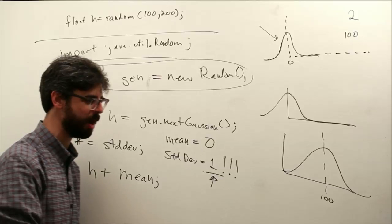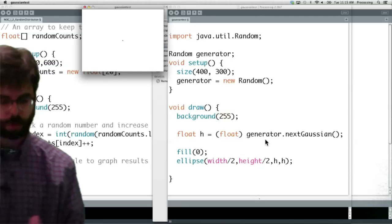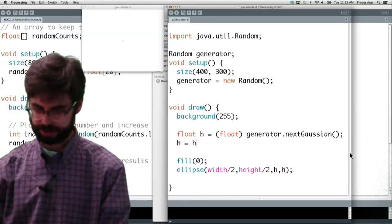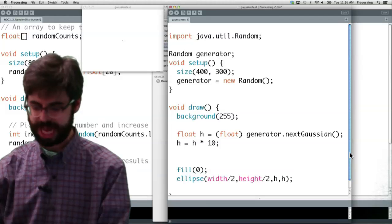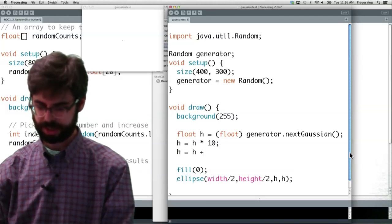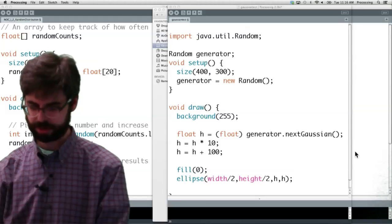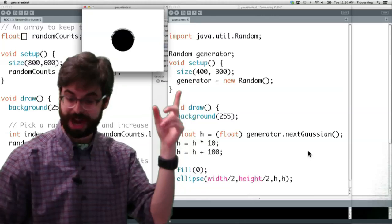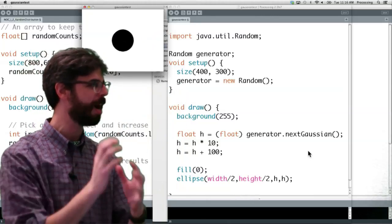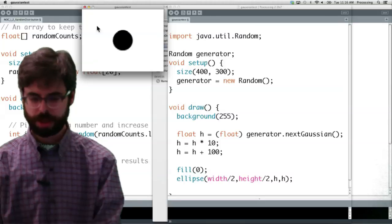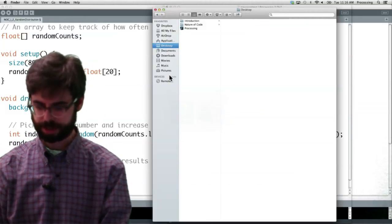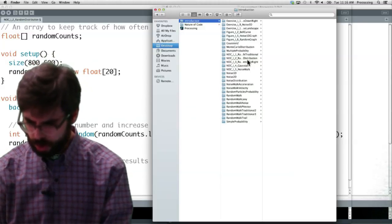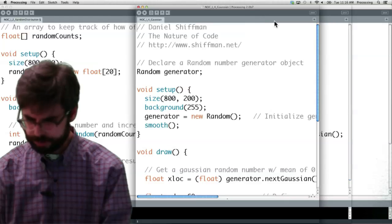Let's go take a look at this now in our example. I can say h equals h times, I'm going to have a standard deviation of 10, and I can say h equals h plus 100, so the mean is 100, and we can see here we're getting some random heights, random sizes, but this is very different than just randomness. You can see they're kind of clustering around one value.